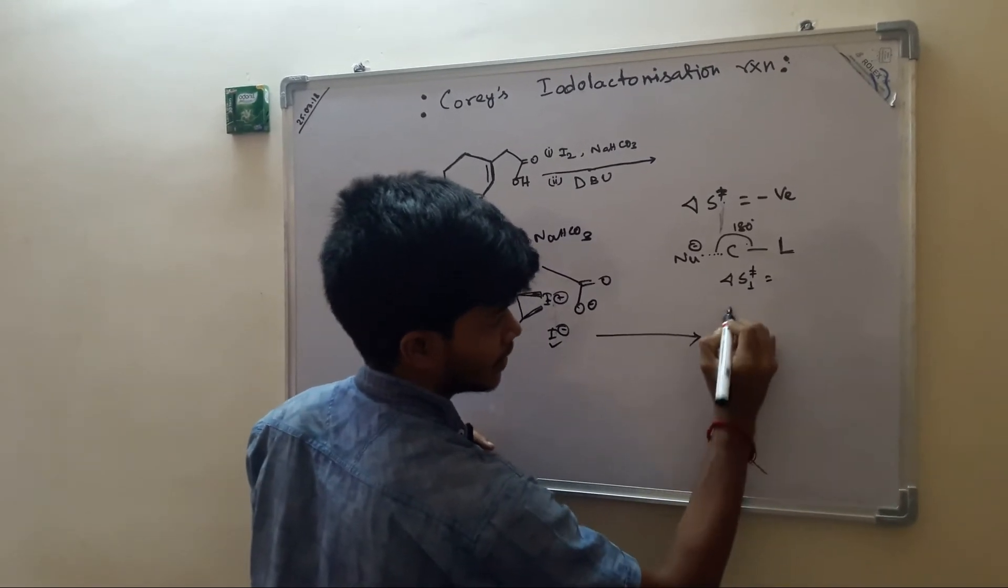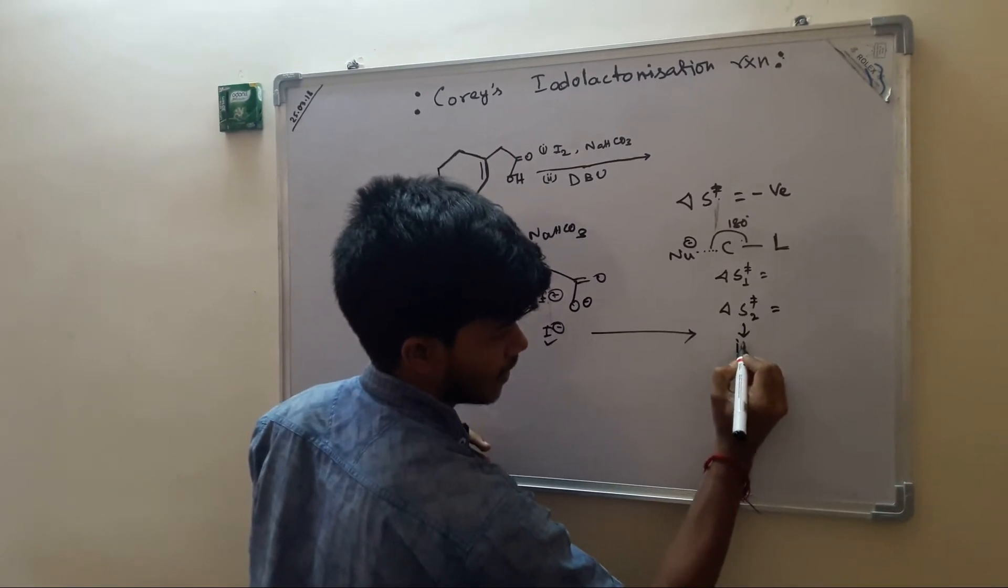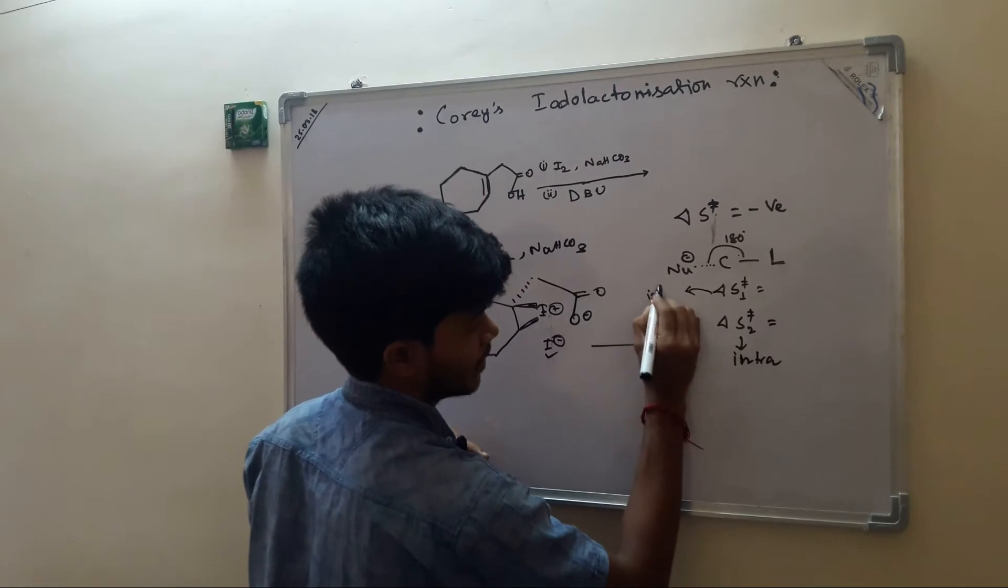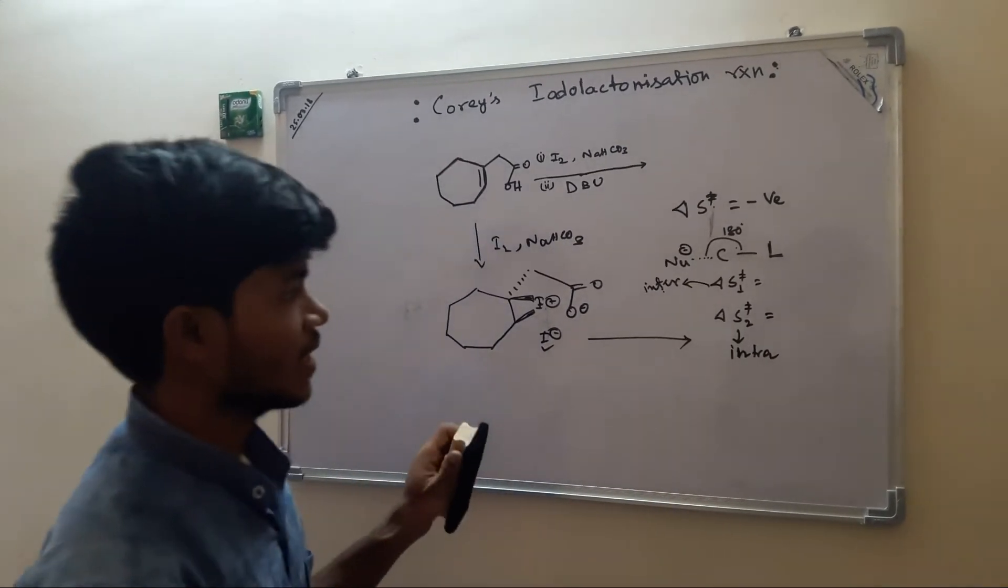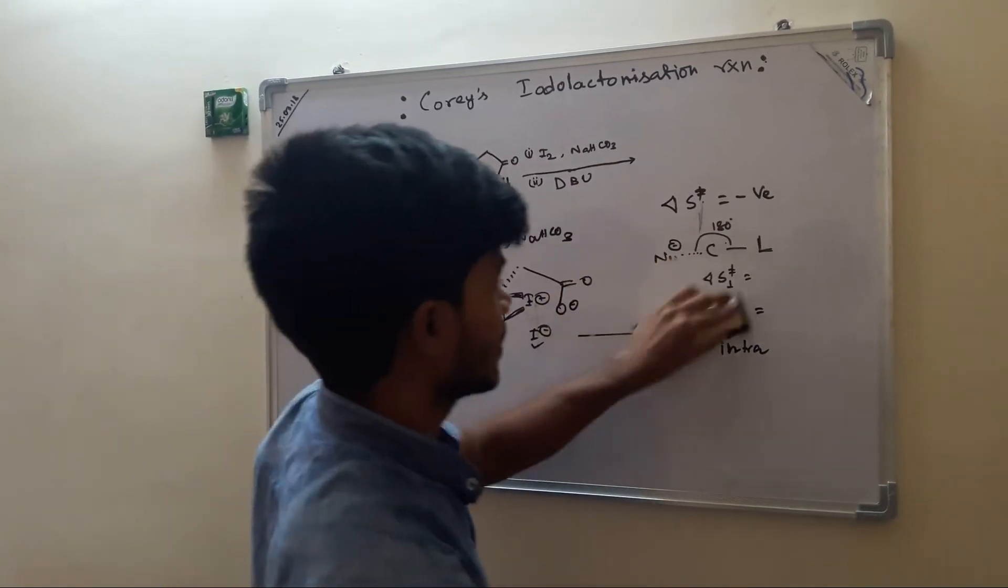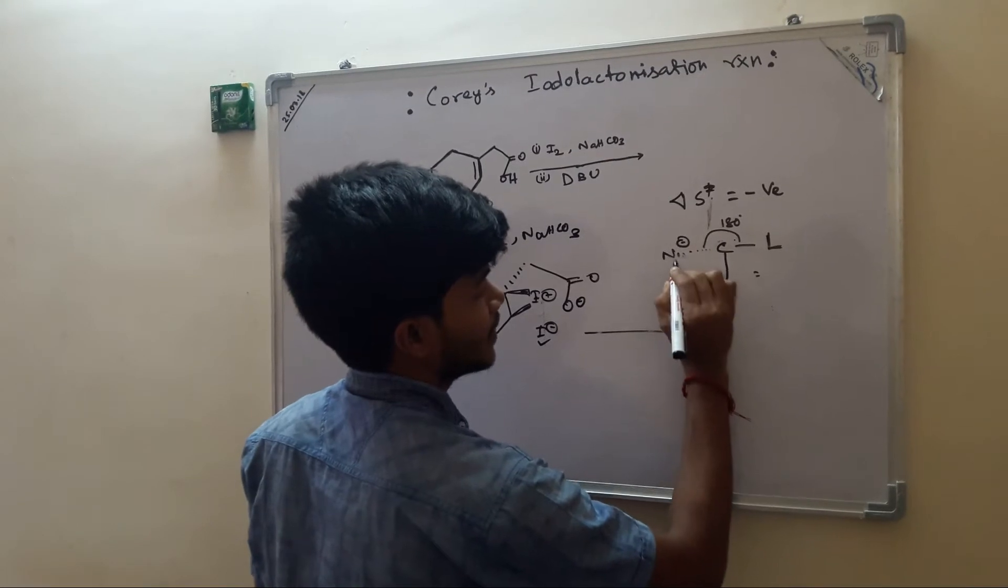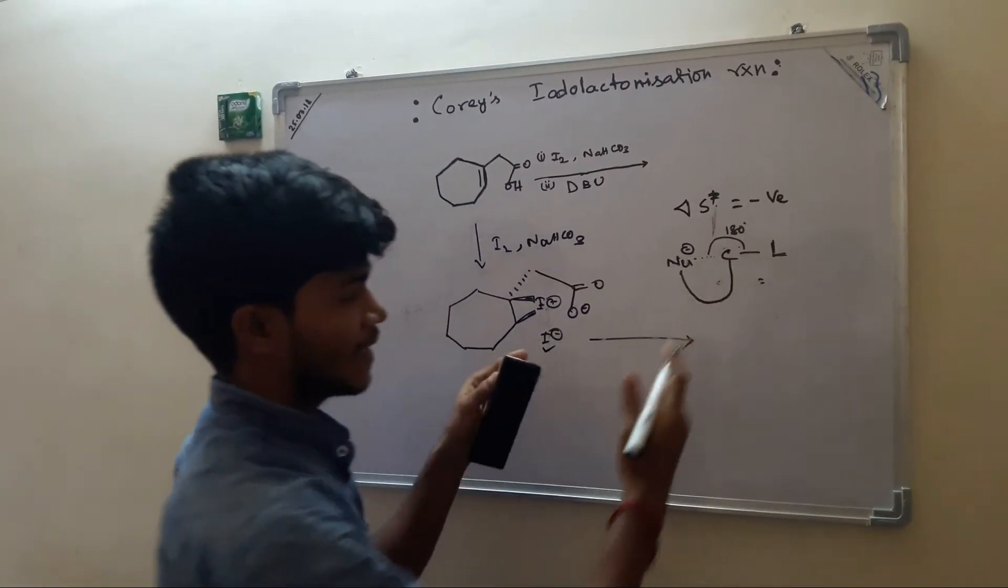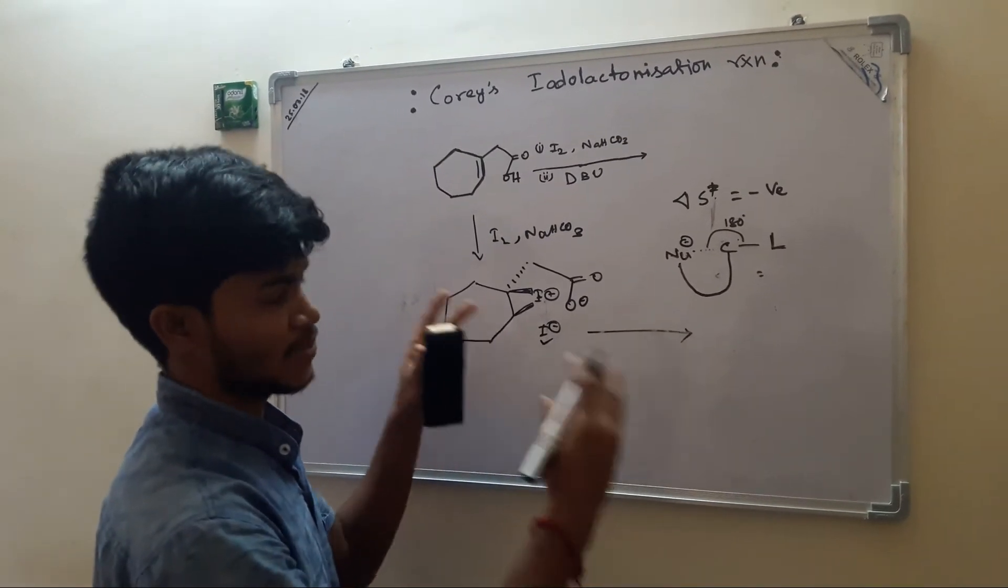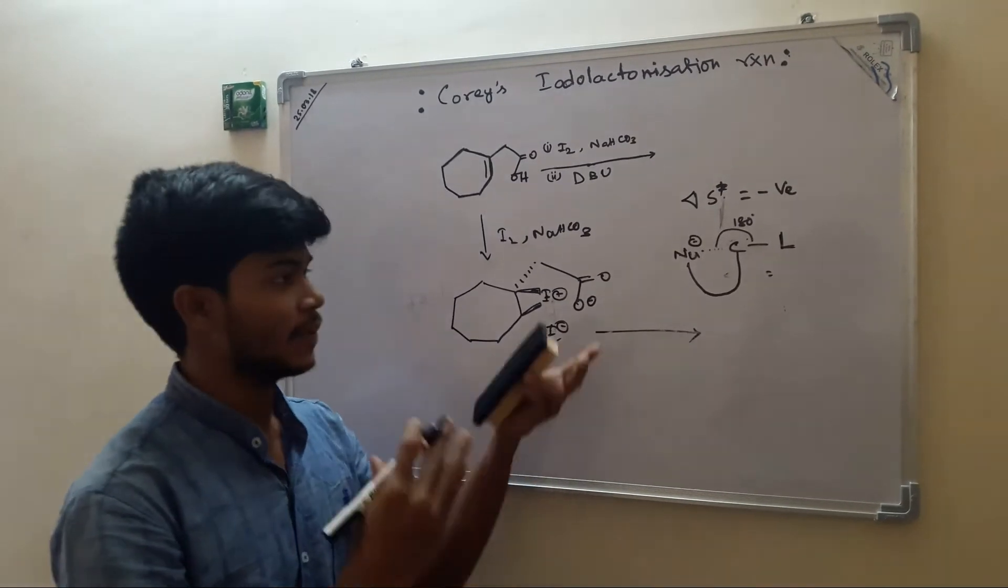For intramolecular reaction, if nucleophile is present intramolecularly, then it is somewhat restricted. So it has to come in specific orientations. There will be Delta S negative, low negative value.